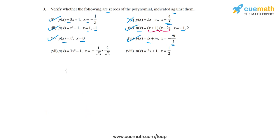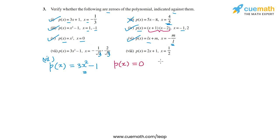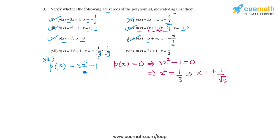In part 7, the polynomial is p(x) = 3x² - 1, and the values to verify are x = -1/√3 and x = 2/√3. Equating p(x) = 0 gives 3x² - 1 = 0, so x² = 1/3, and x = ±1/√3. These are the two zeros, so x = -1/√3 is a zero, but x = 2/√3 is not a zero of p(x).